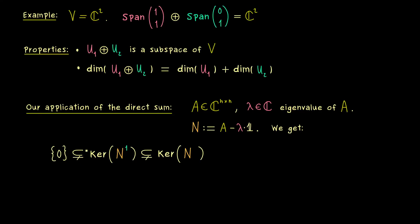This means we start with the zero vector space, and then comes the kernel of N to the power 1, and then comes the kernel of N to the power 2, and so on. And this whole chain will end at a given index, which we call the fitting index.